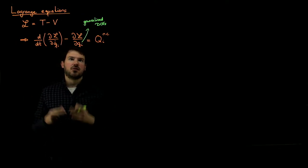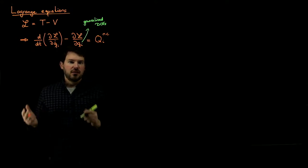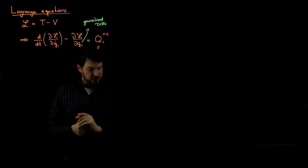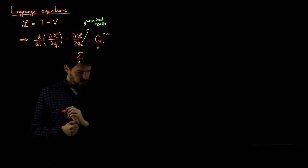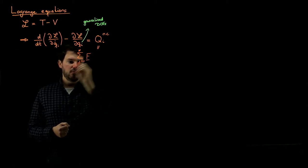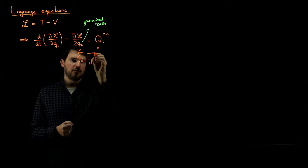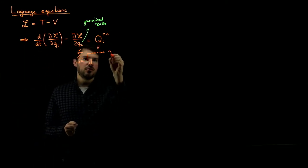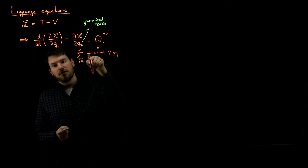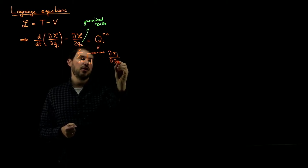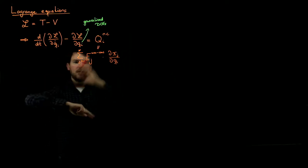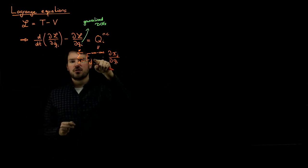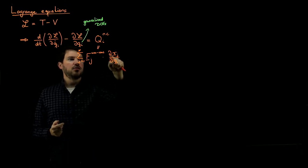If we have non-conservative forces, then we have a right-hand side. This is nothing else but the sum over all j from 1 to N of the real non-conservative forces in the system — forces that come from friction, dashpots, damping, and anything of this type — times the derivative of r_j, the point of attack of this force in the real system, differentiated with respect to the generalized degree of freedom q_i. In a general system moving in 2D or 3D space, you will have non-conservative forces if, for example, you attach your particle to a dashpot or if there's friction. The point of attack of this force is a point in 3D space.